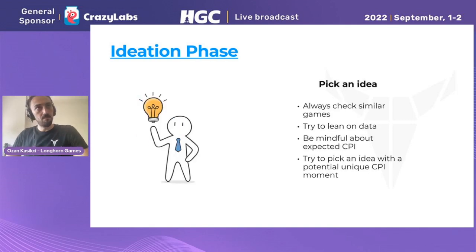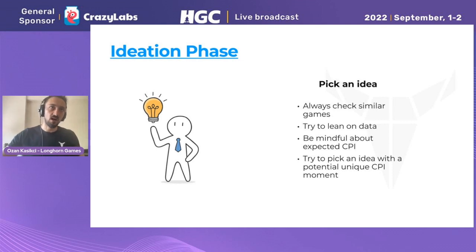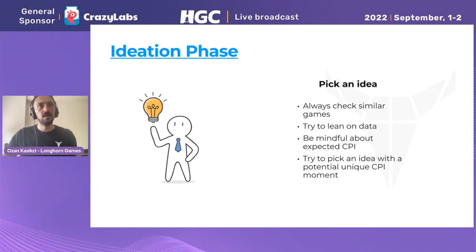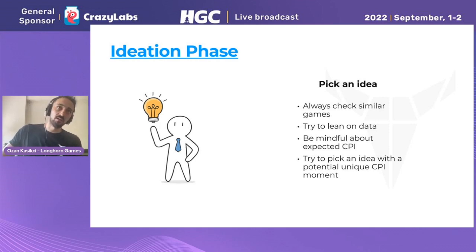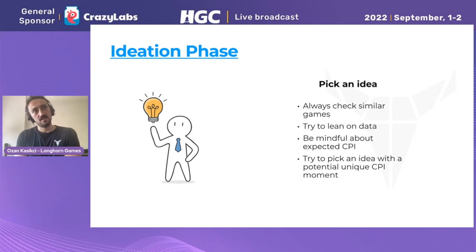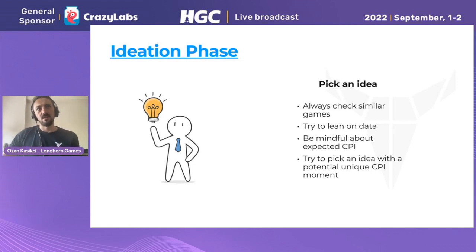Picking an idea has some criteria. First, check similar games and see how successful they were — try to take something successful from them, some element or something pleasing to see or play. You need to gather as much data as possible and lean on that data. You shouldn't be moving by instincts but according to data. You should always be mindful about CPI, because CPI is most of the time the hardest thing to improve in hyper casual games. If you have a high CPI it's very hard to bring it lower, so from the get-go you need to be careful about CPI.